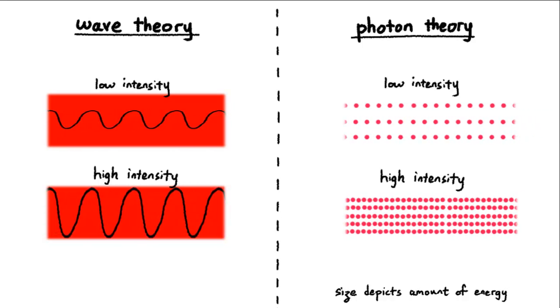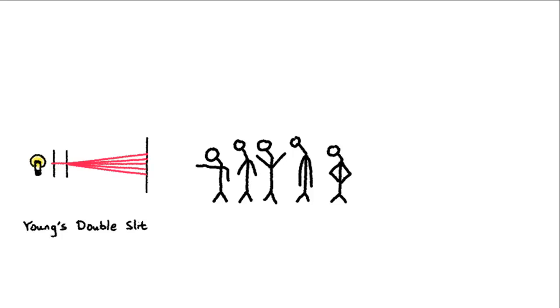So which theory is right? Waves or balls? In the 1800s, thanks to Young's double-slit experiment, everybody thought that light is a wave.